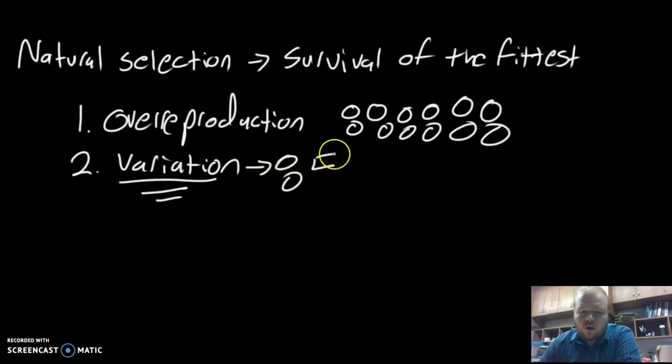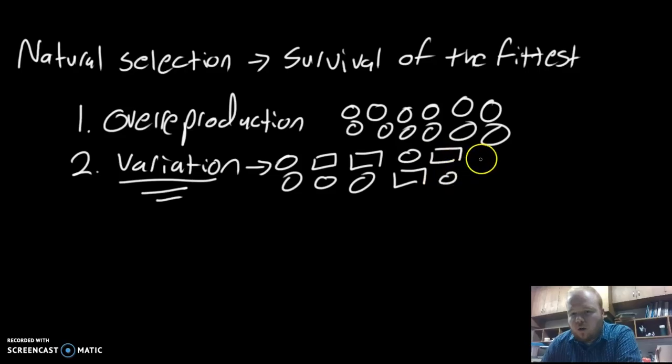For natural selection to occur, you must have this key component: variation. That is, the same population of organisms, every one of them slightly different. This variation happens due to what we eventually learn is genetics—organisms take on different appearances over time. Without variation, natural selection does not occur because all organisms would look identical.